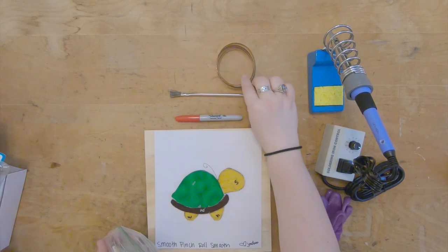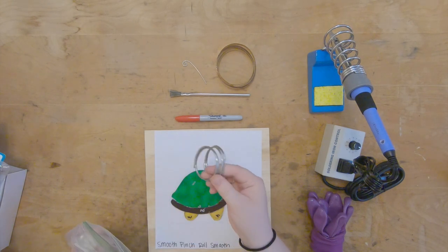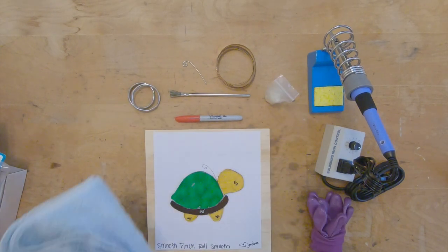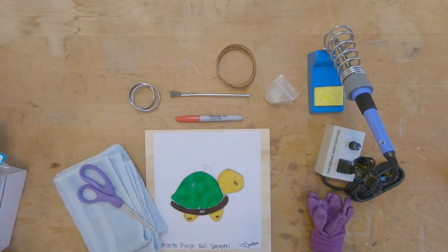We have our foil, wire hanger, 60-40 solder, and our flux. The only thing you will need to provide is a towel and a pair of scissors.